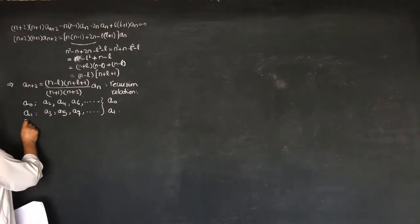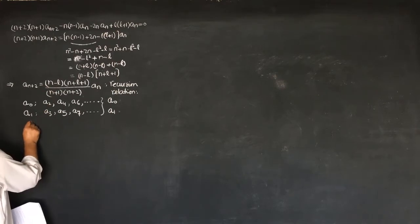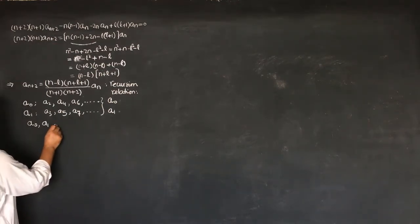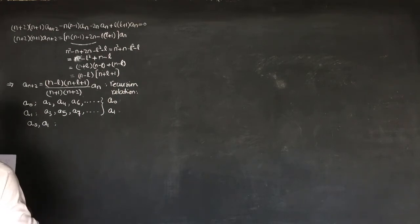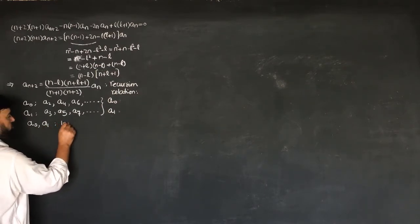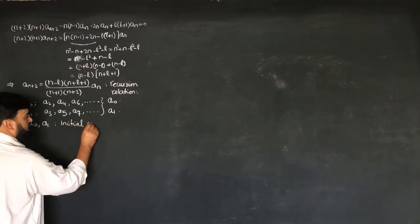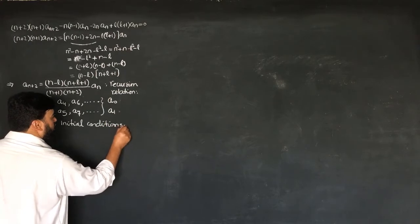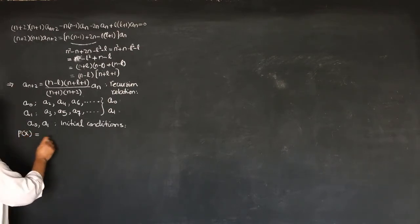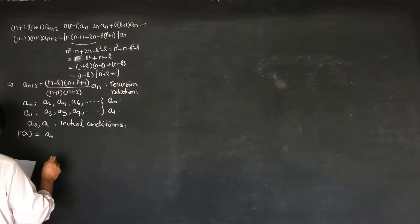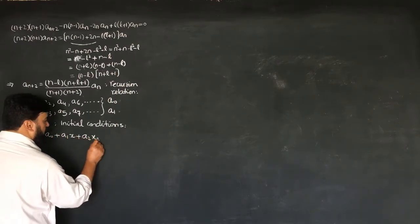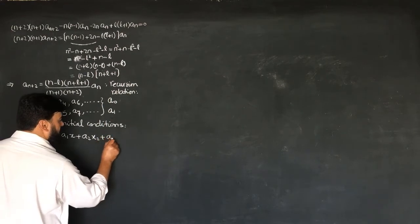To find all the values, a_0 and a_1 are to be determined first from the initial conditions. We write P in terms of the power series: the sum of a_n times x^n, so a_0 plus a_1 x plus a_2 x^2 plus a_3 x^3...